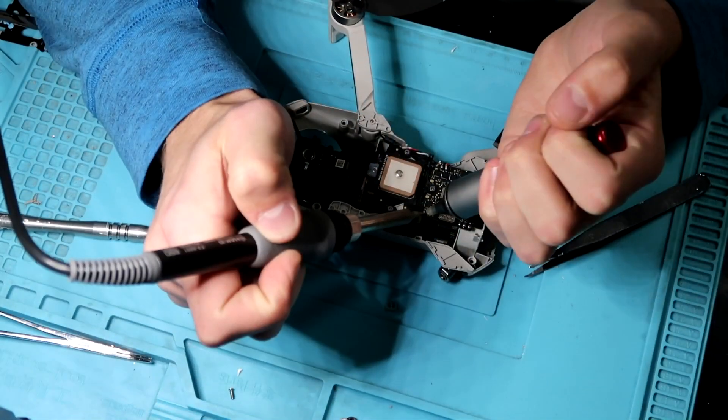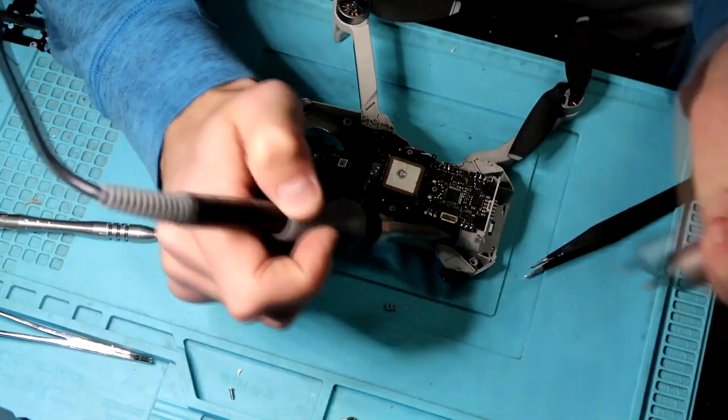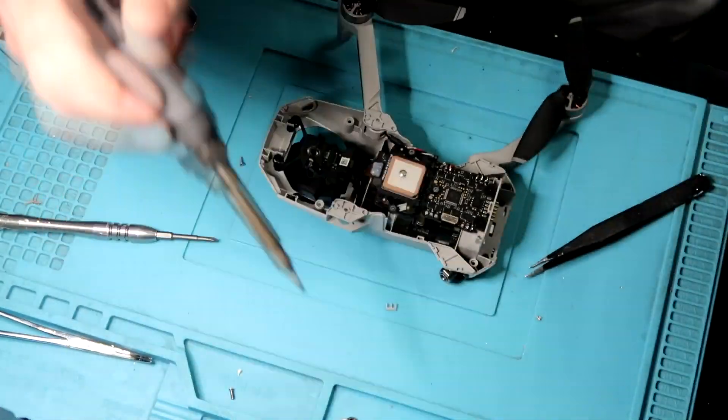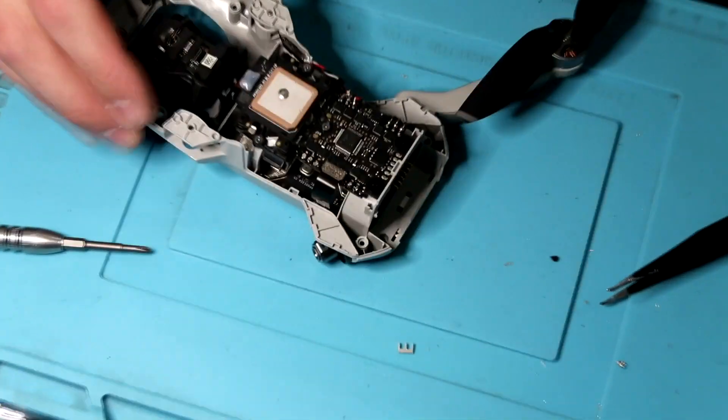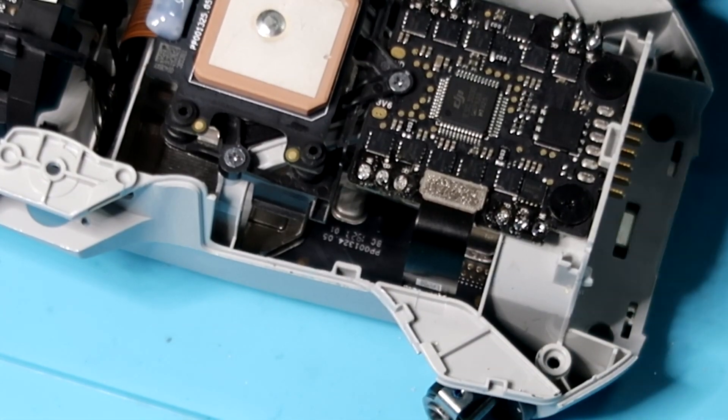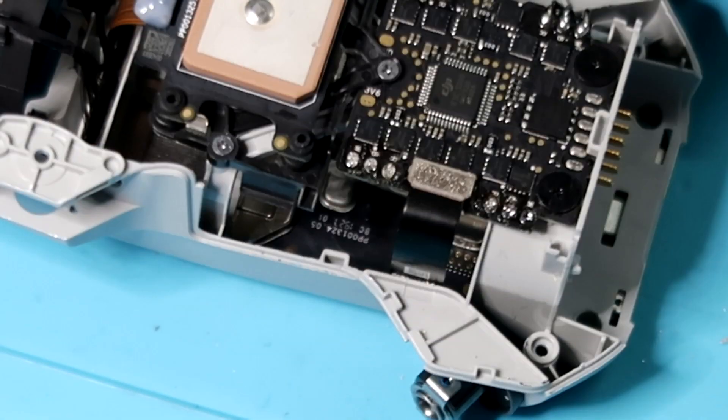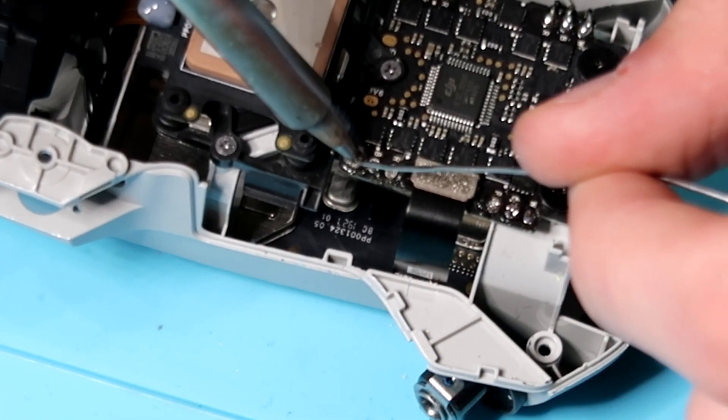This is a step I really recommend everyone start doing if you're not, and this is just cleaning the solder off the pads and adding fresh solder. What this is going to do is just ensure a solid connection and make sure there's fresh flux on the pads so you have an easy time re-soldering the wires.